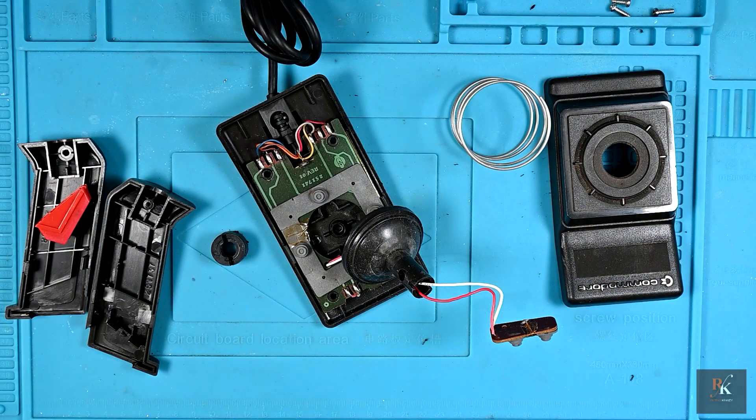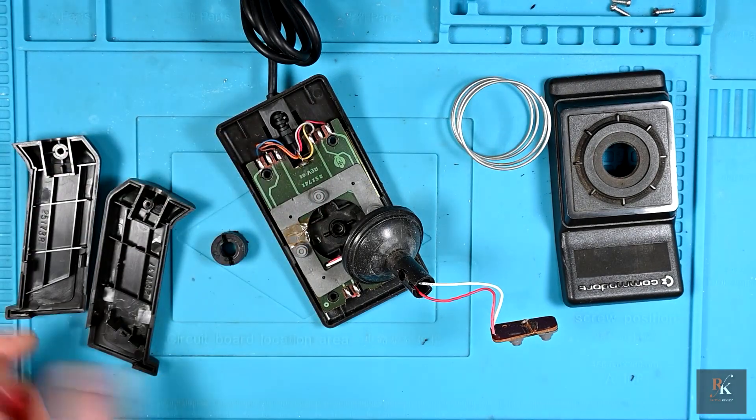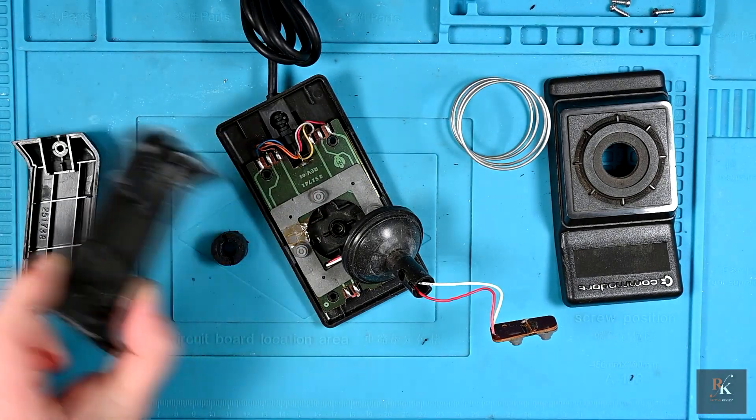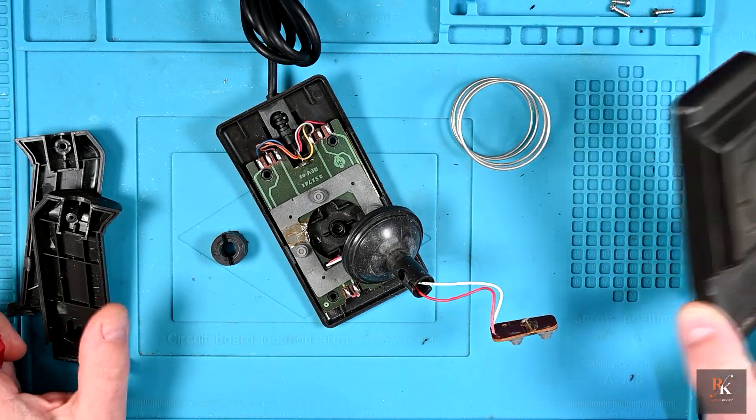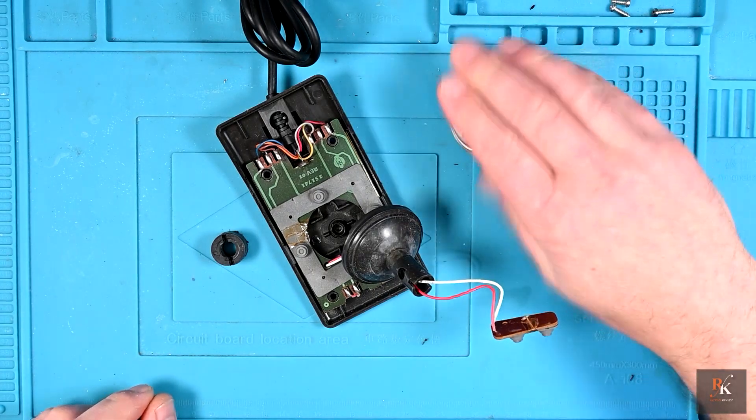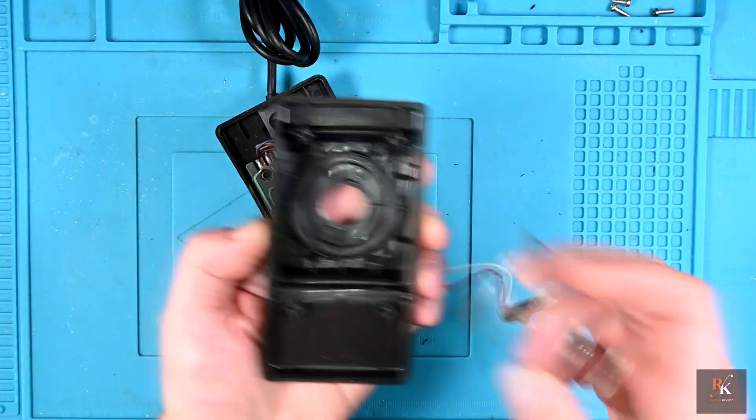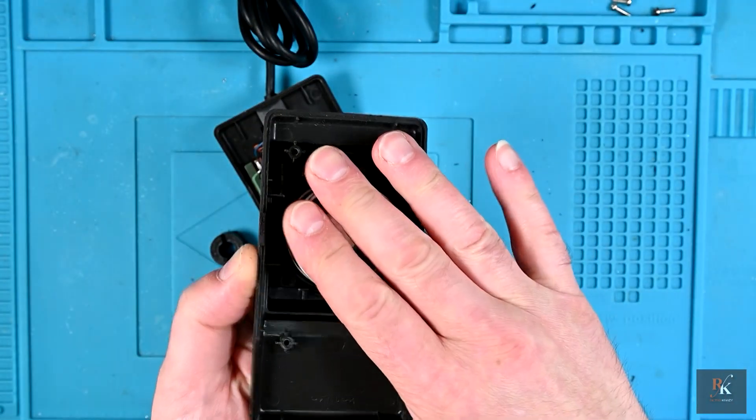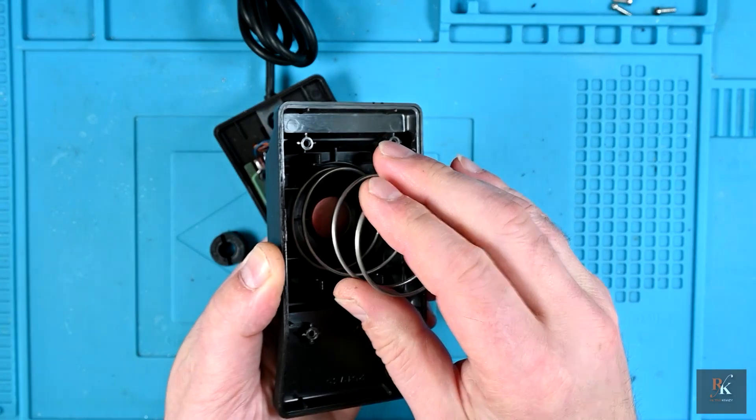So here we are, the first look at the insides. We've got a number of plastics that are going to need a bit of clean, if for no other reason than to get the finger juice off them. Mmm, tasty. We have a spring which sits and holds this against the top case, and that gives us a little bit of the spring plus centering.